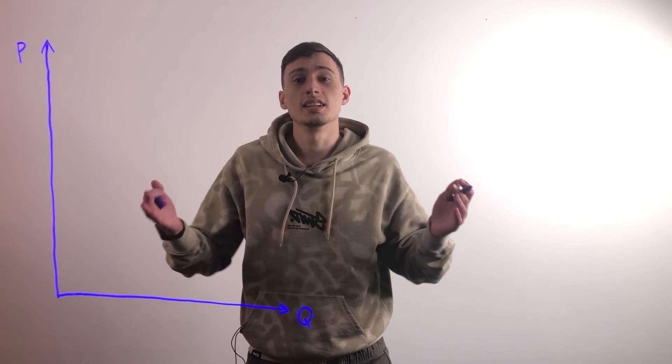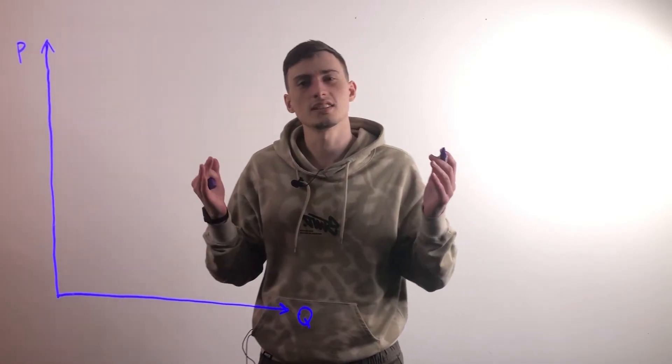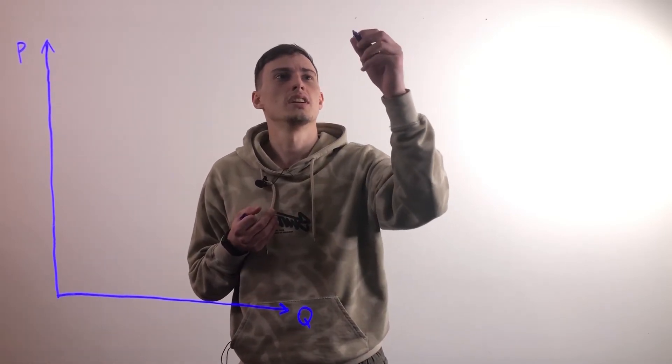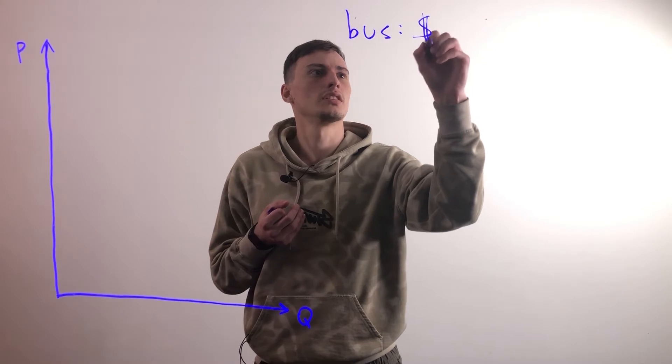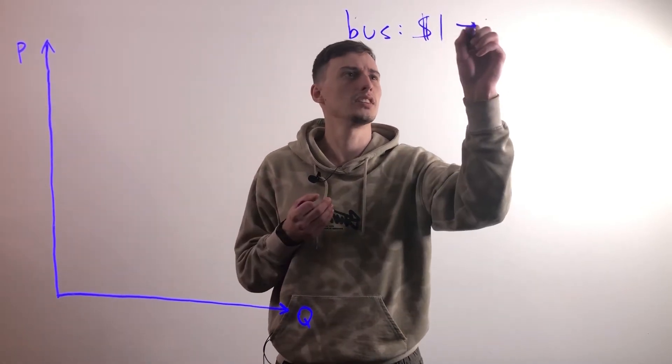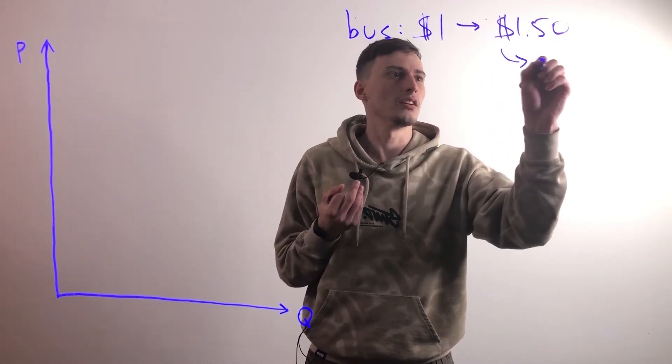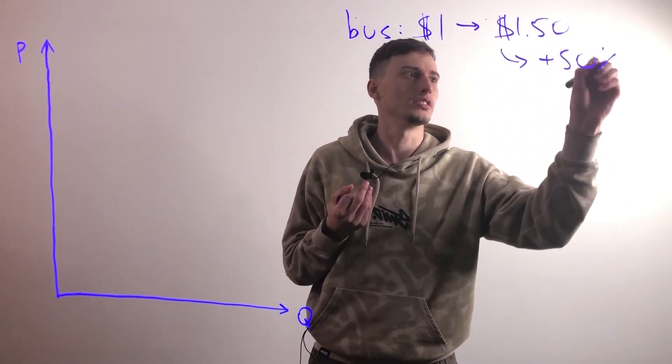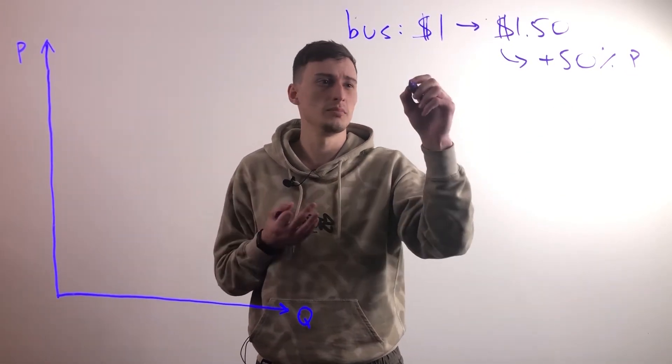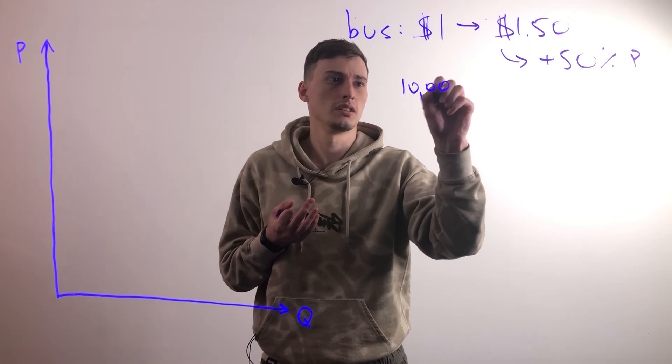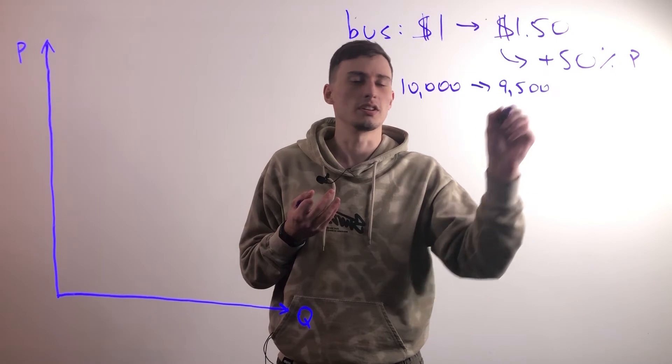So now let's take a look at some real world examples to really help you make sense of this. Let's take into account public transportation, so bus fares. Let's say a ticket for a bus costs one dollar and the price increases to a dollar fifty. Now this is a 50 percent increase in price. And let's say that on an average day, ten thousand people ride the bus, but because of the increasing price now only nine and a half thousand people start riding the bus.